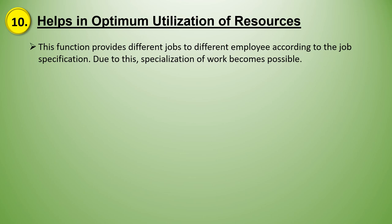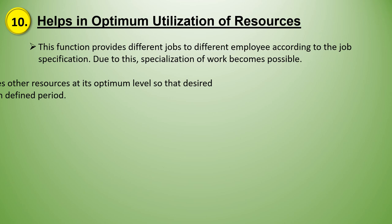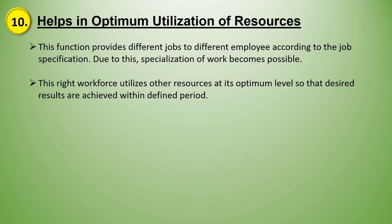The tenth point is helps in optimal utilization of resources. This function provides different jobs to different employees according to the job specification, due to which specialization of work becomes possible. The right workforce utilizes other resources at optimum level so that desired results are achieved within defined periods. If the right person is appointed at the right place, it brings specialization, and due to specialization, these employees will use other resources at an optimum level — meaning they will not waste resources, but try to use minimum resources and bring maximum output.